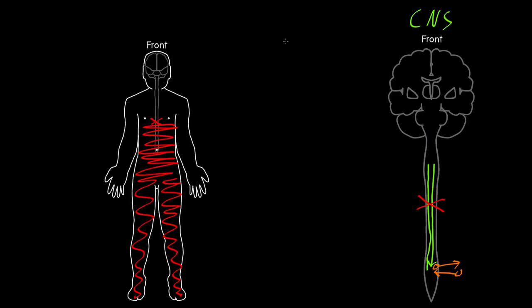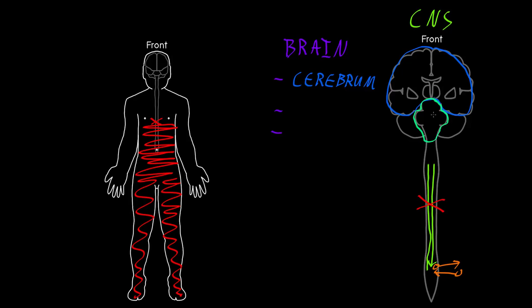The brain is divided into three main parts. On the top, the biggest part is called the cerebrum. Below that is a structure that connects the spinal cord below to the cerebrum above, which we call the brain stem. And kind of behind the brain stem is another part called the cerebellum. The cerebellum does a number of things, but one of the most important is to coordinate movements, so that a lesion of the cerebellum may lead to incoordinated movements.